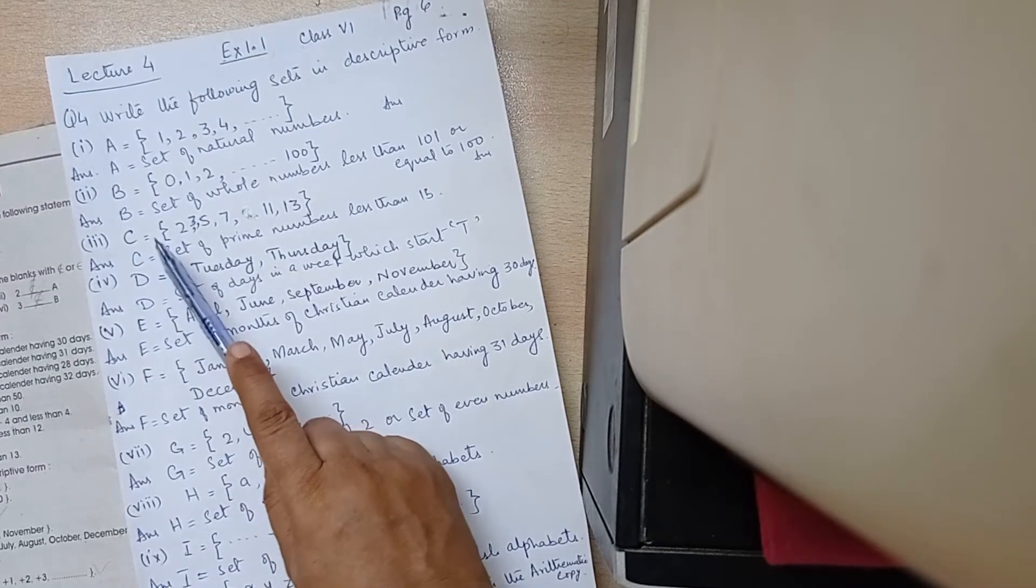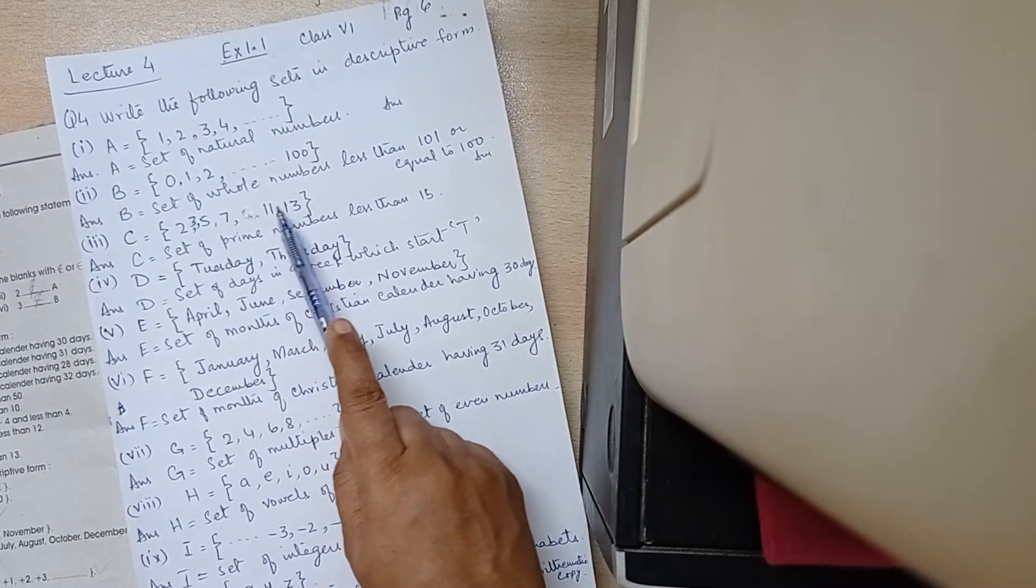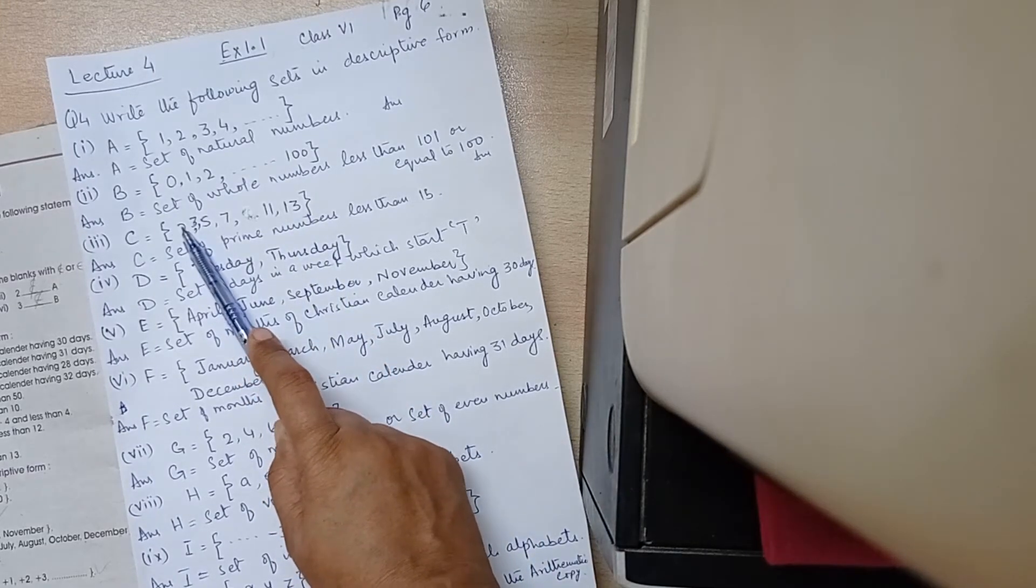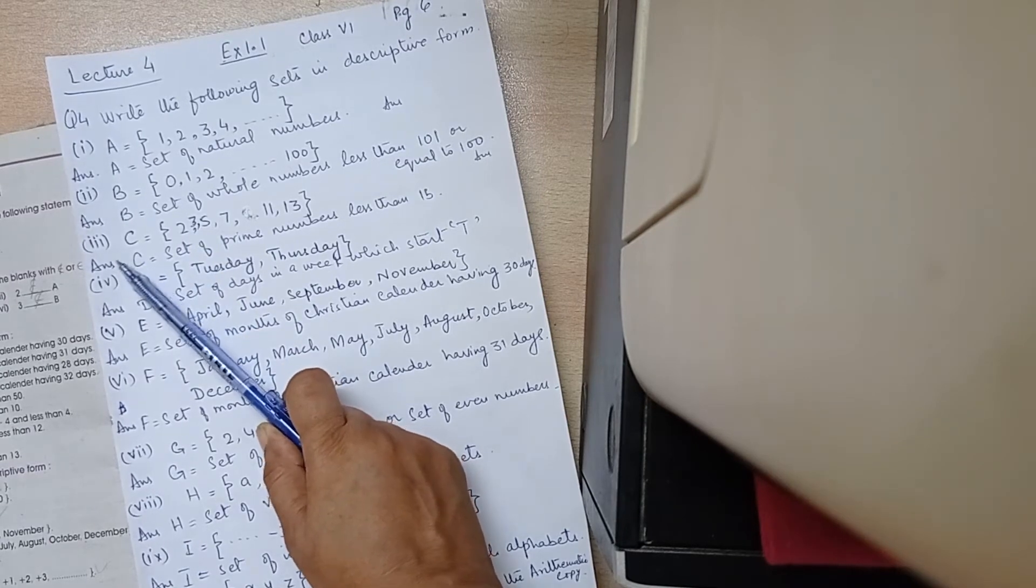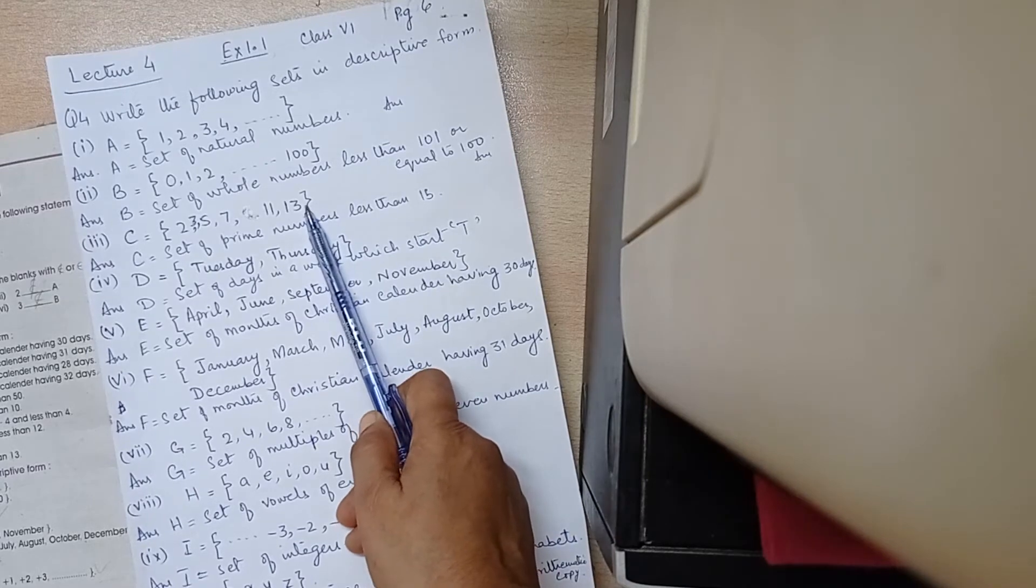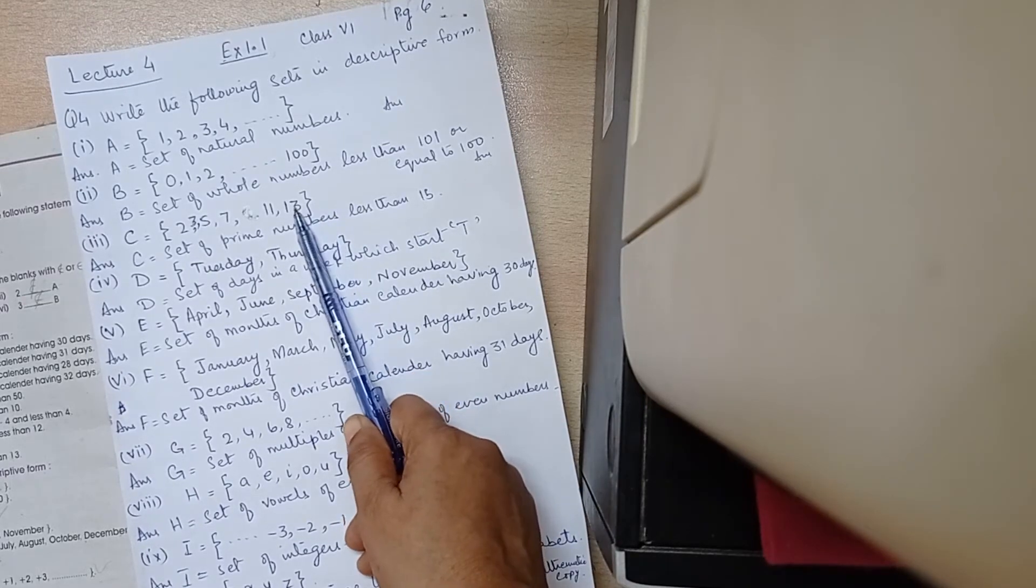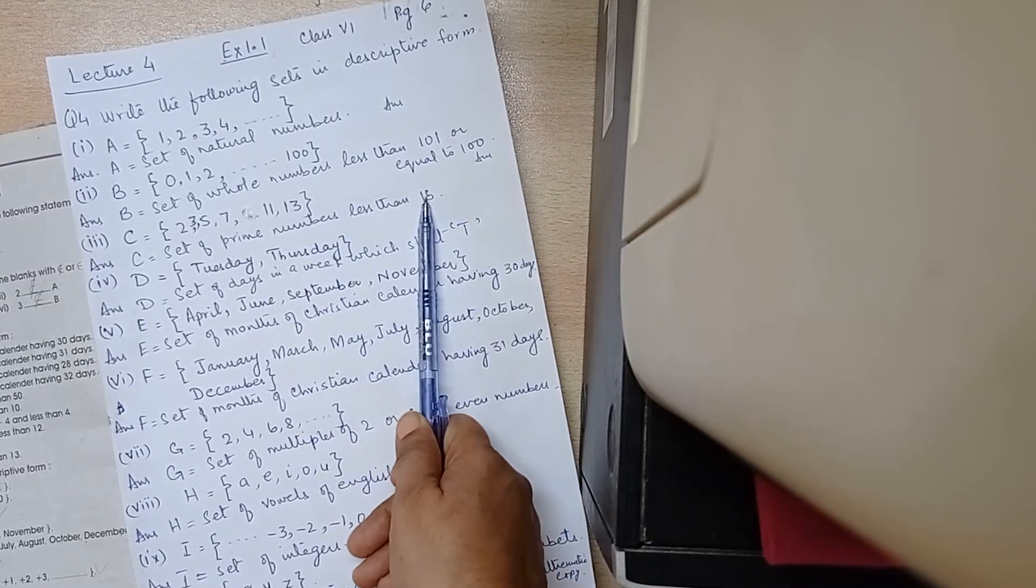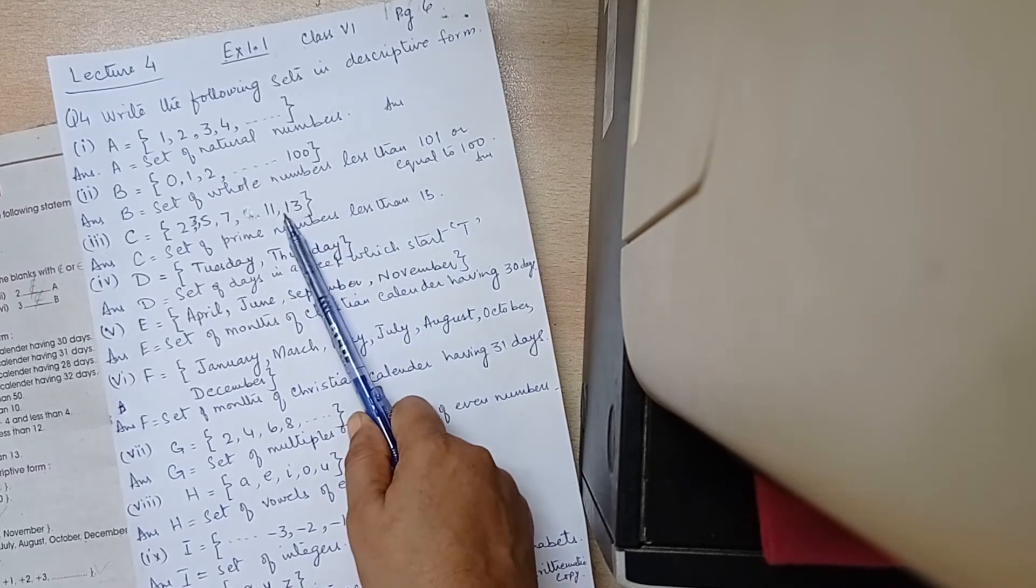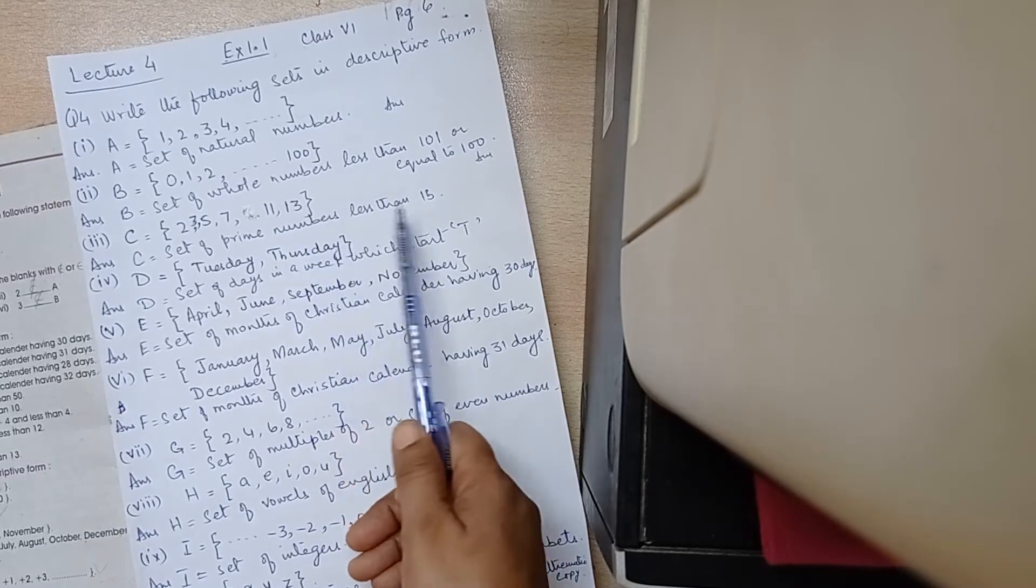C is equal to 2, 3, 5, 7, 11, 13. It is not another table, it is prime numbers. C is equal to set of prime numbers less than 15. If you have a limit given to you, you can increase the number to 14 and 15. We have less numbers. In the last number of prime numbers, they stop at 13.